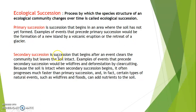Secondary succession is the succession that begins after an event clears the community but leaves the soil intact. In primary succession, succession starts from a primary substrate that is free from living organisms. In secondary succession, there will be recolonization of the community. Events that precede secondary succession include wildfires and deforestation by clear-cutting. Because the soil is intact when secondary succession begins, it often progresses much faster than primary succession, and certain natural events such as wildfires and floods can even add nutrients to the soil.